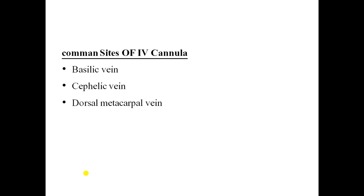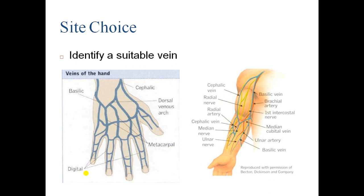The common sites for IV cannula are the basilic vein, cephalic vein, and the dorsal metacarpal vein. You need to identify a suitable vein at these locations.